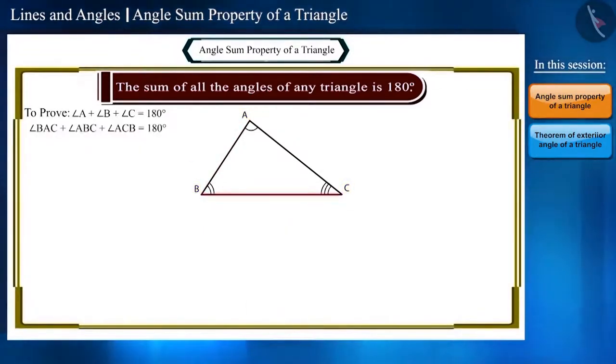Now, let's draw a line parallel to any one side of this triangle. Let's draw a line parallel to side BC in such a way that it passes through the third vertex of this triangle. Let's call this line PQ.